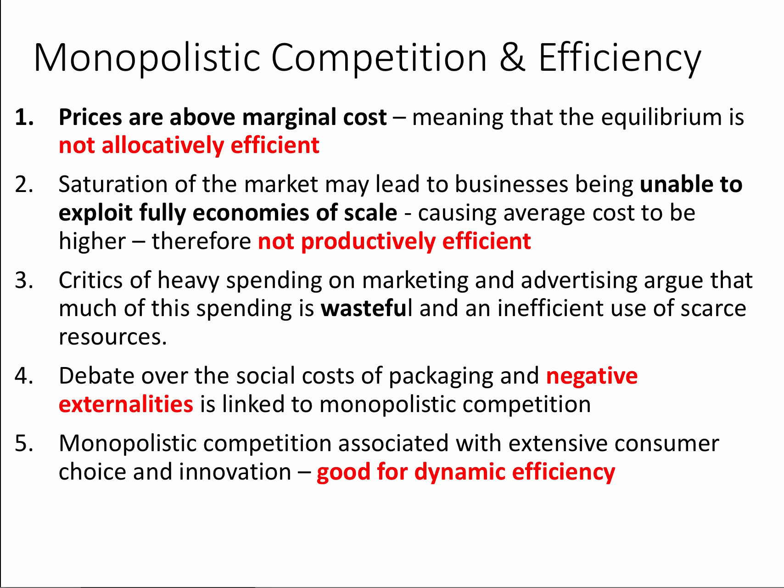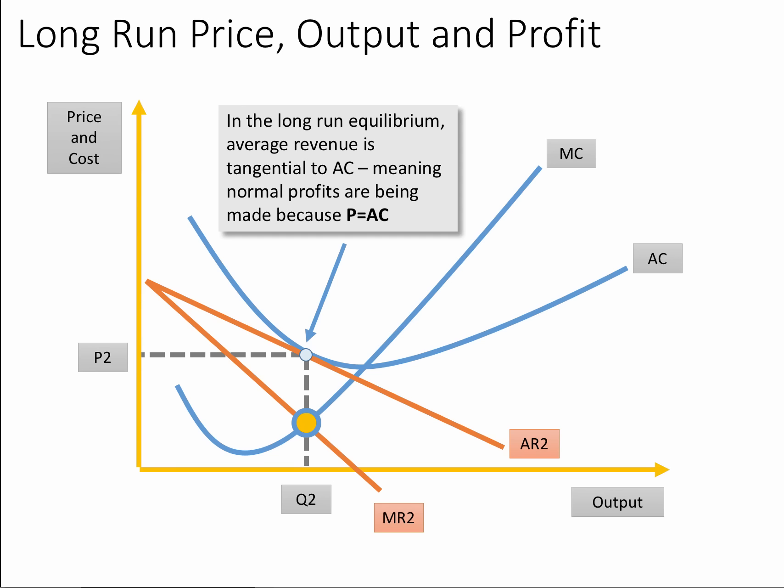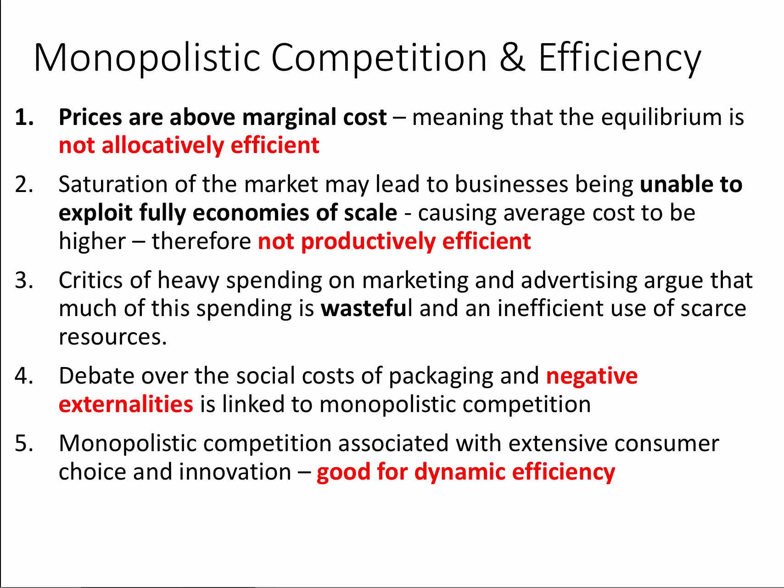However, monopolistic competition can be quite good news for choice — there is a lot of choice in the market with each firm selling differentiated products. It may also be good news for innovation, with businesses trying to innovate at the margin to make their products slightly better and slightly more sustainable than rival products. So dynamic efficiency could be better than under imperfect competition.